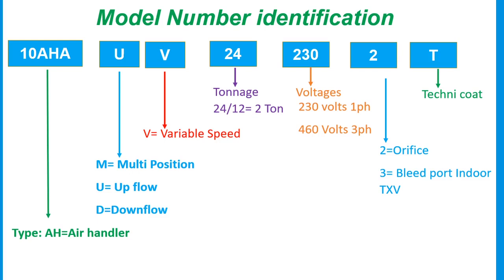The next digits, 230, indicate voltage — 230 volts, single phase. If it were 460, that would mean 3-phase power. The next character indicates phase — 2 or 3. Finally, TXB stands for thermostatic expansion valve, and 'T' represents Technocold.